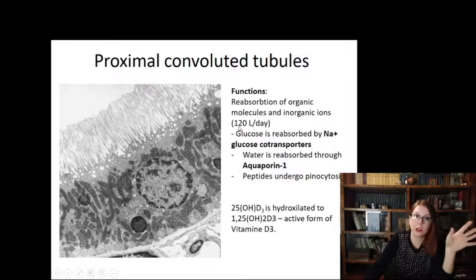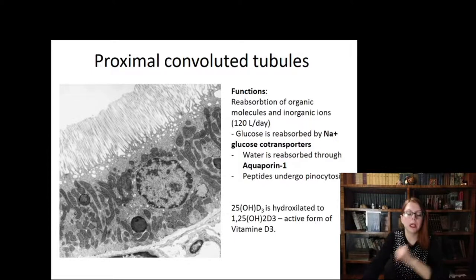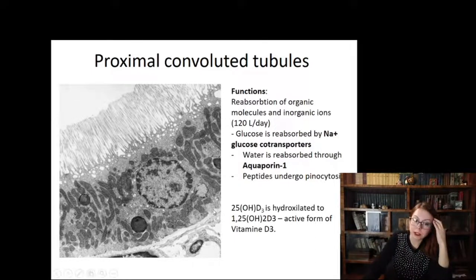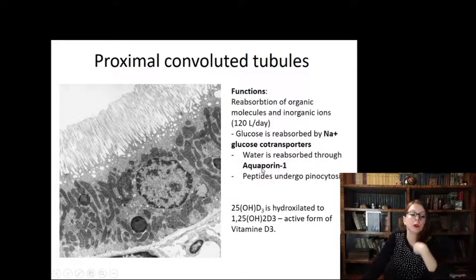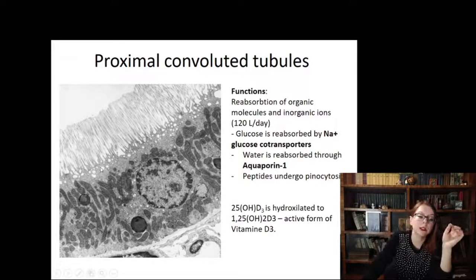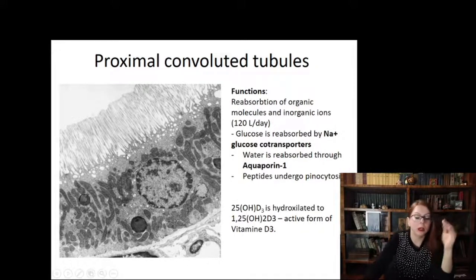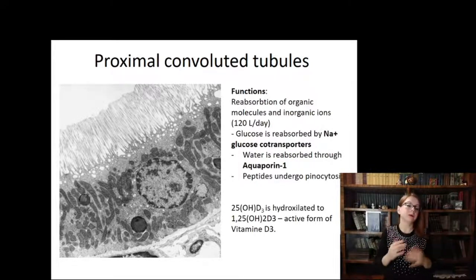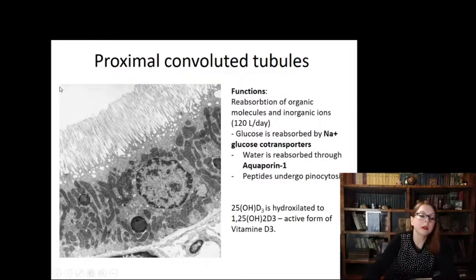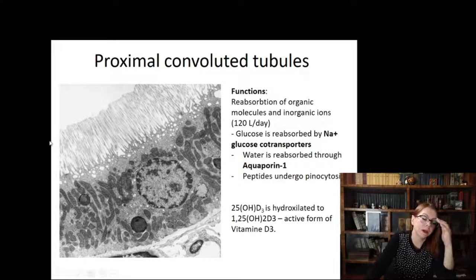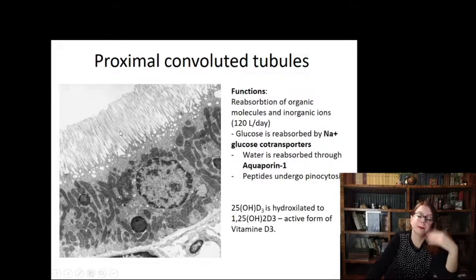Exactly in the proximal convoluted tubules, reabsorption of nearly 120 liters takes place. Many different transport systems work here: glucose is transported together with sodium, water is transported via aquaporin channels, and small peptides undergo pinocytosis — so pinocytotic vesicles can be seen near the apical membrane. Regarding ultrastructure, the proximal tubule cells have microvilli on their apical surface — that's why they resemble the small intestine — and they also produce peptides and participate in digestion of peptides and amino acids.